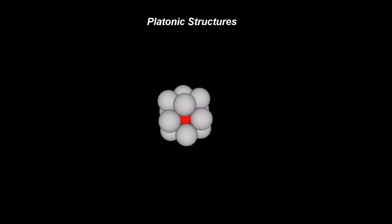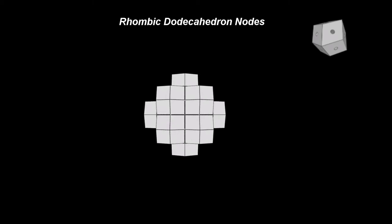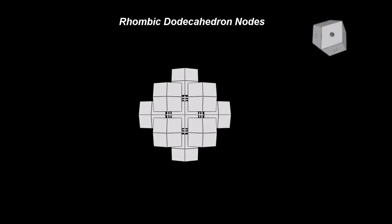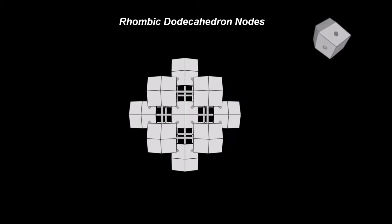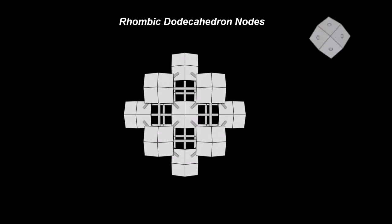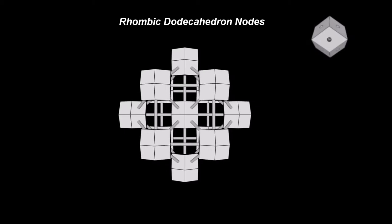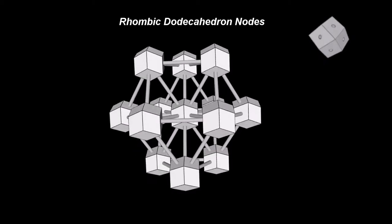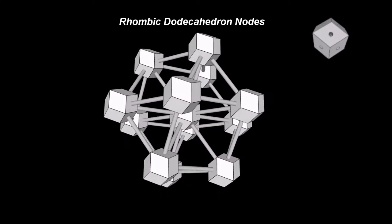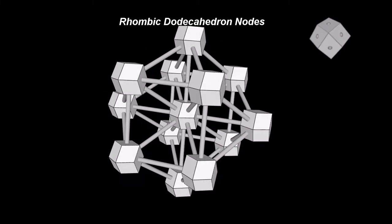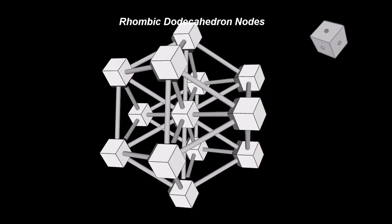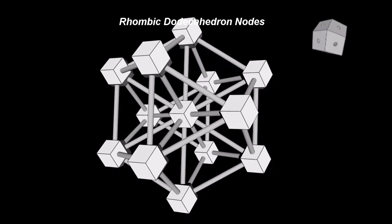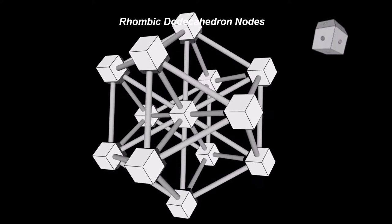From a practical point of view, the rhombic dodecahedron is a better choice when building physical structures. Its 12 faces help us better see the 12 directions in space. This is the node that is used to assemble platonic structures.